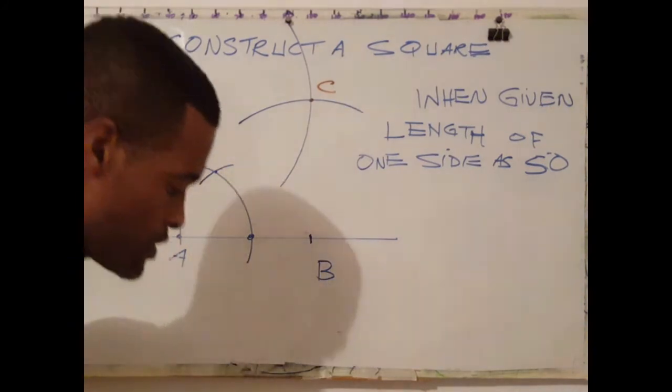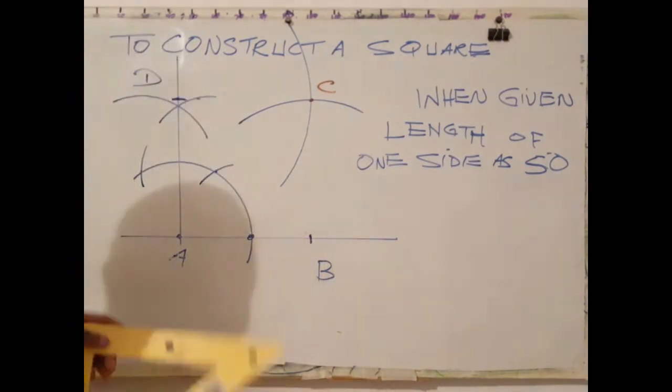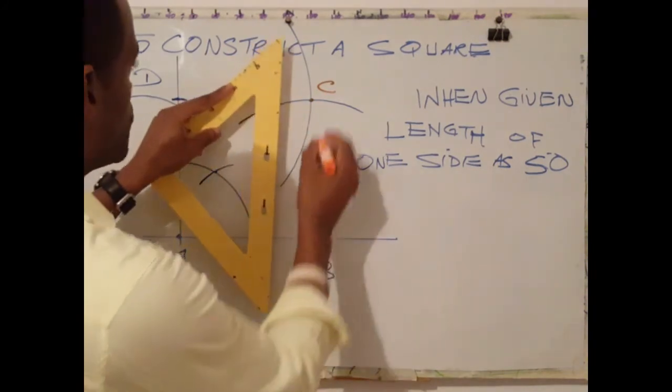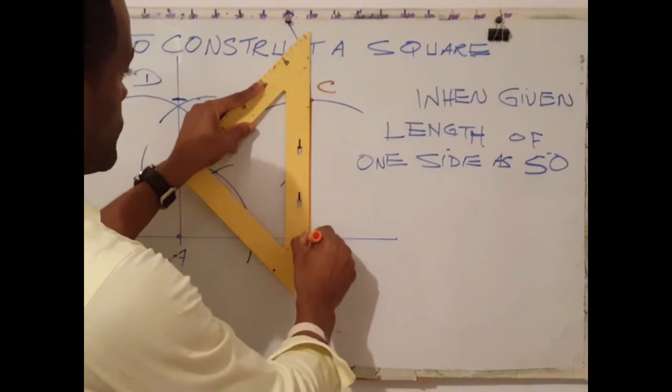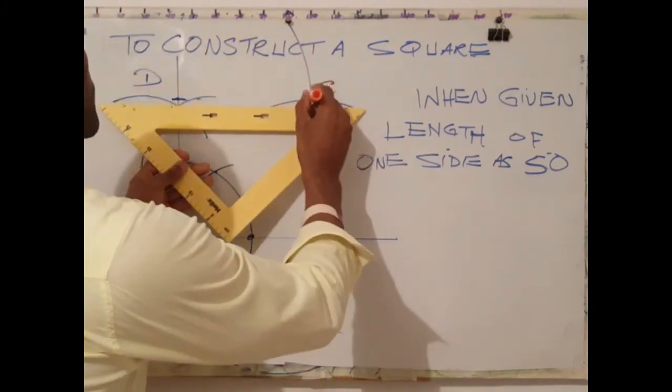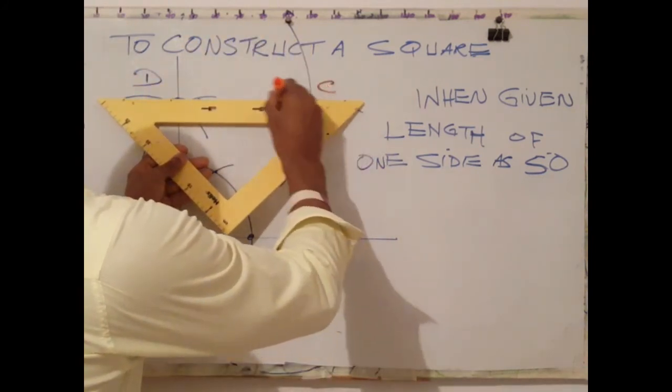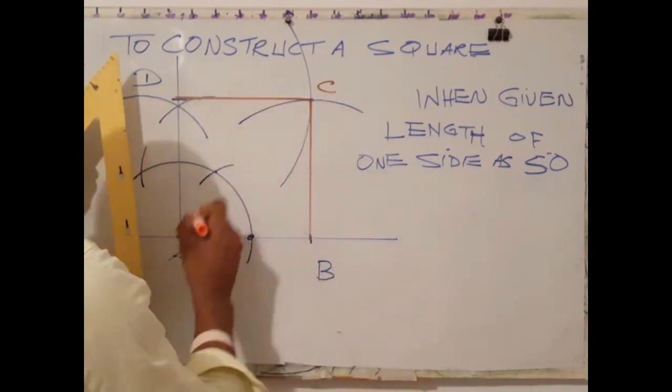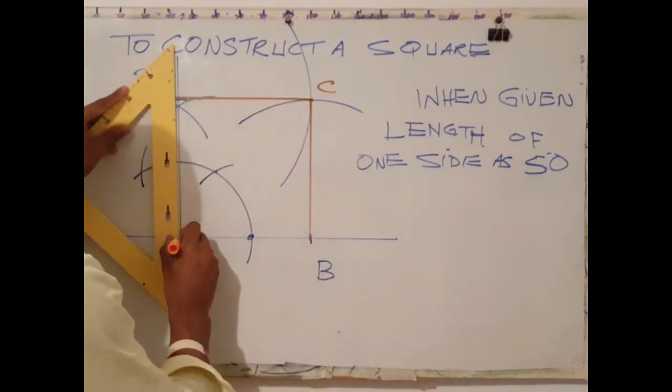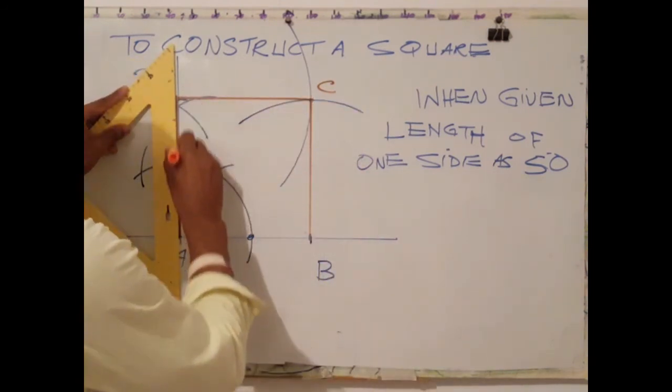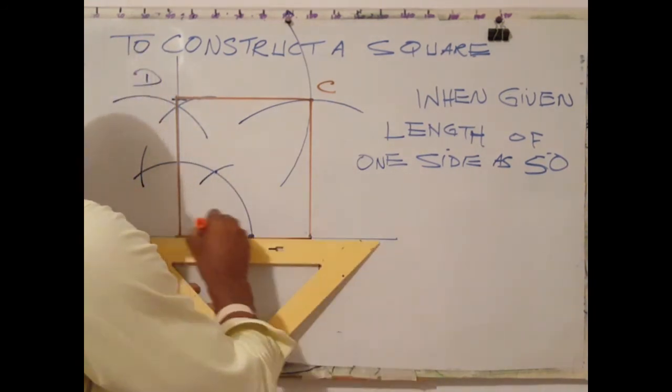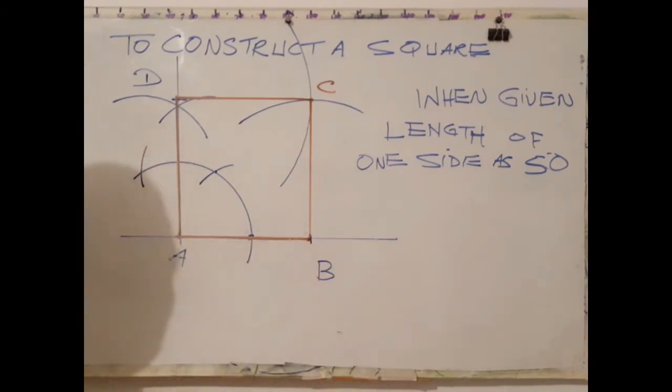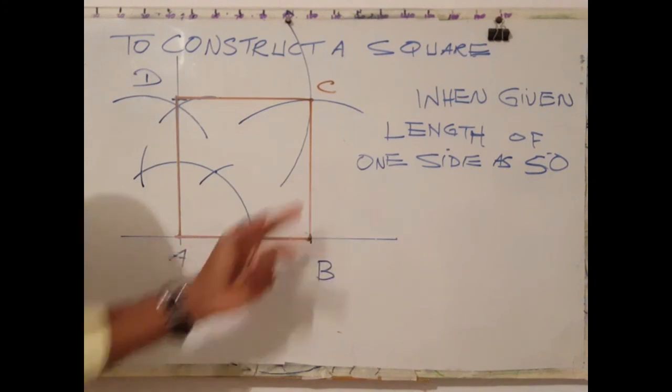The final step is to join B to C. Join point B to point C, point C to D, brighten up A to D, and A to B. And that is how we draw a square when given the length of one side.